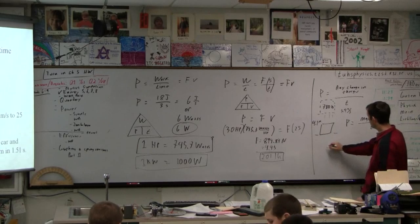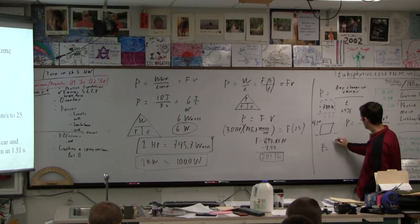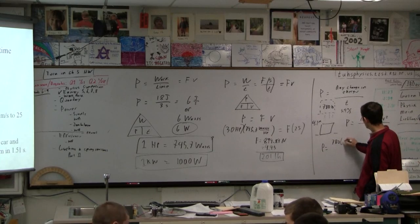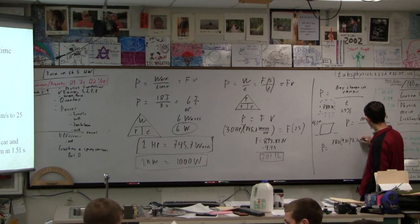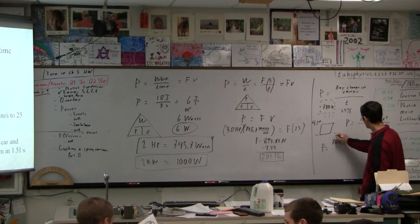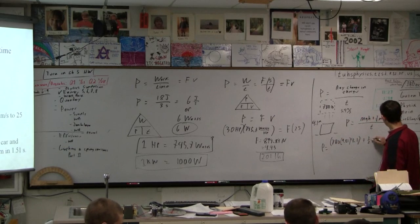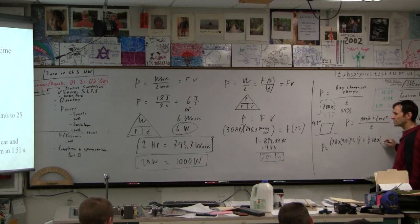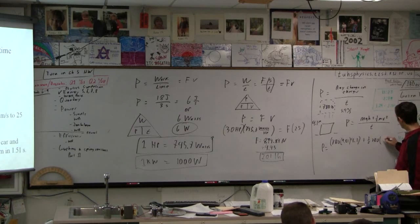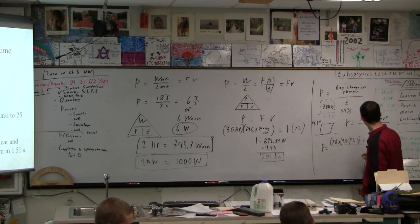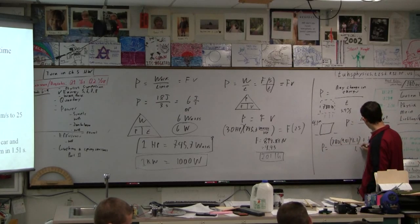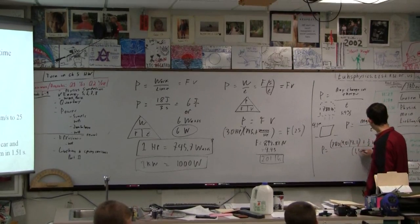That's going to be, the power is going to be 780 times 9.81. The height is 4.1 meters, plus 0.5, 780, and then what's the speed? 5.4, divided by 1.51 seconds.